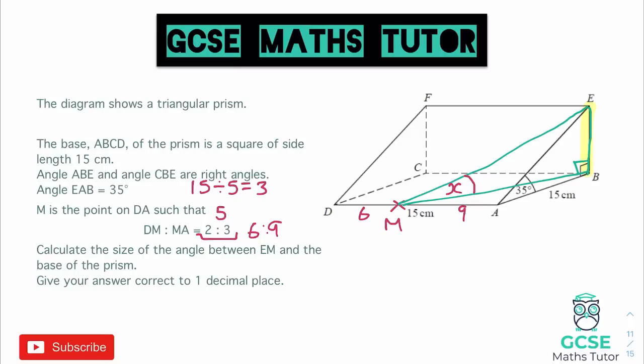So we're going to start by working out E to B. So to work out E to B, let's have a look at that triangle on the right-hand side of the prism. So if we draw that out, we've got a triangle. This angle here is 35 degrees, and we have a base length of 15. So to find the side opposite, that's going to be the opposite side, and this is going to be the adjacent side. So we're going to use our tan formula triangle, TOA.